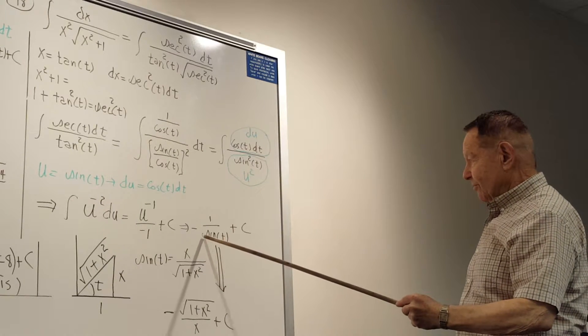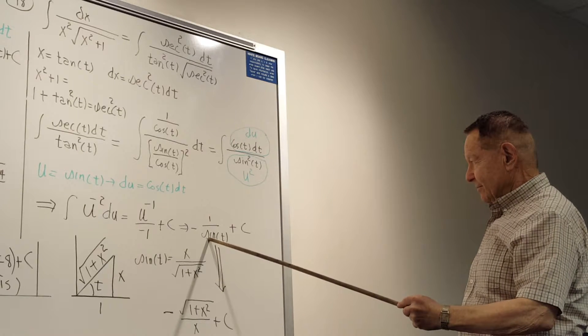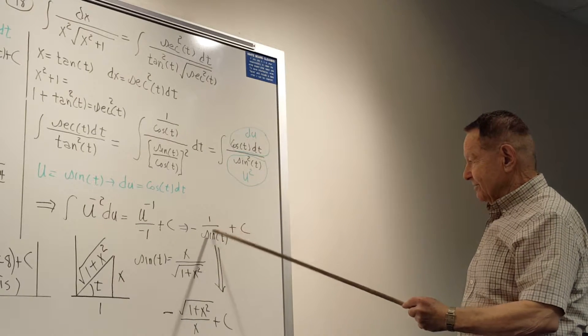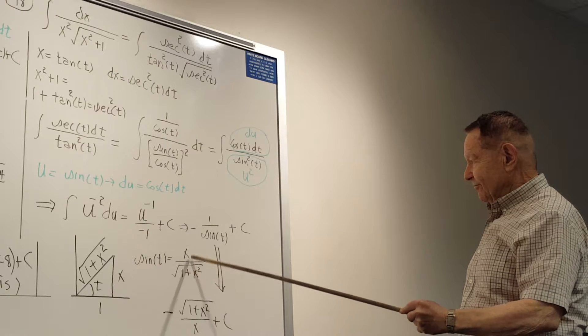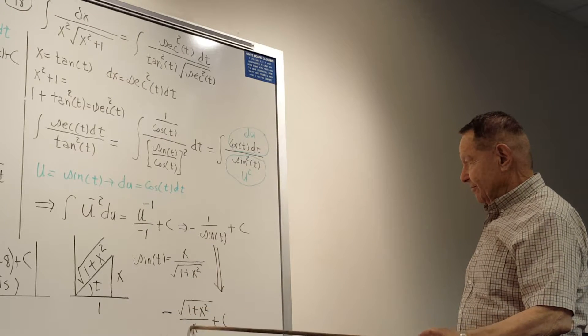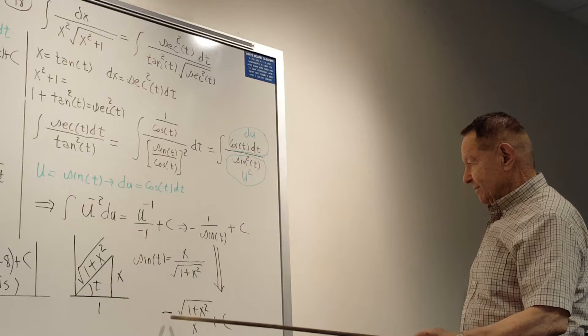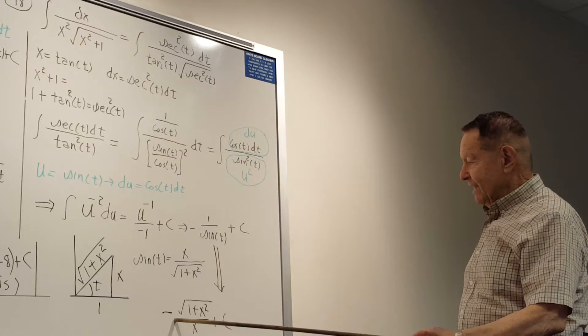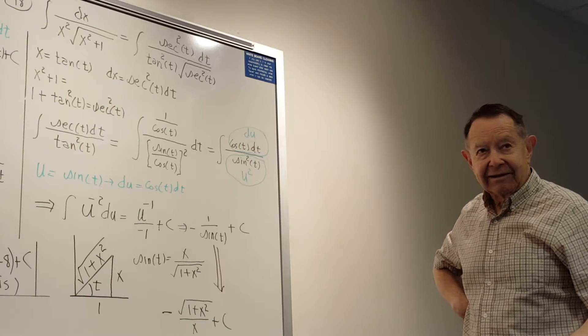So one over the sine, which of course you could say is cosecant, you can just flip this over and you have your minus. So finally in terms of x, you get an answer like that.